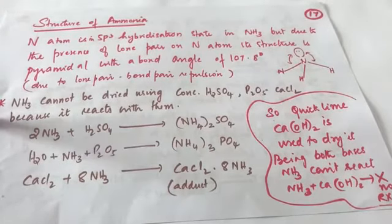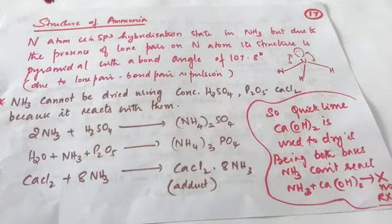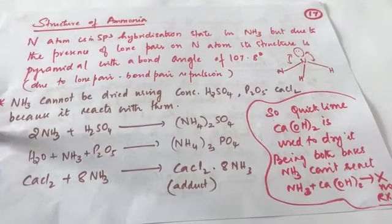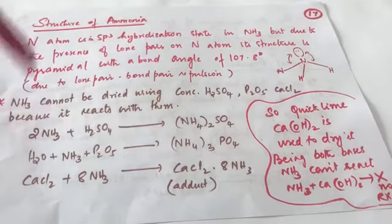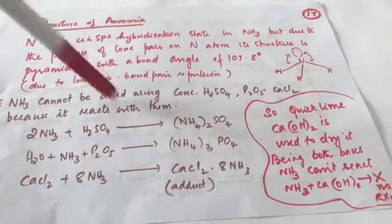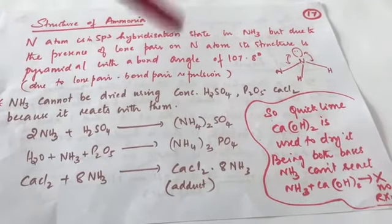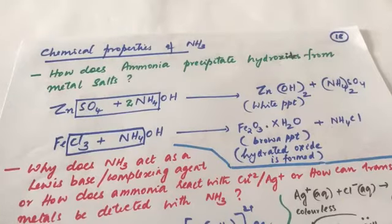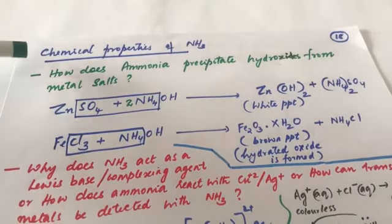This is a tricky and commonly asked question: why can NH3 not be dried using concentrated sulfuric acid? The answer is that NH3 acts as a base and reacts with H2SO4 to form ammonium sulfate. Since it reacts with the drying agent, it cannot be dried using it.